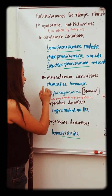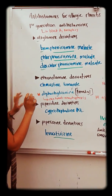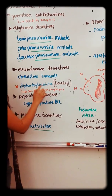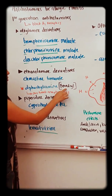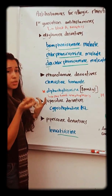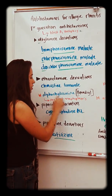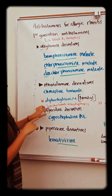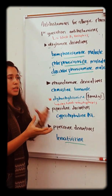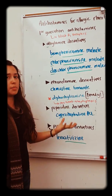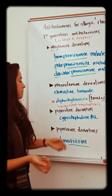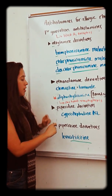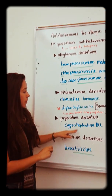Clemastine fumarate has a prototype drug chart in the book. Then there's diphenhydramine — most people know it as Benadryl. This is one of the only antihistamines used to treat anaphylaxis, a severe allergic reaction. Most first-generation antihistamines don't work for anaphylaxis, but Benadryl does. Then we also have cyproheptadine.